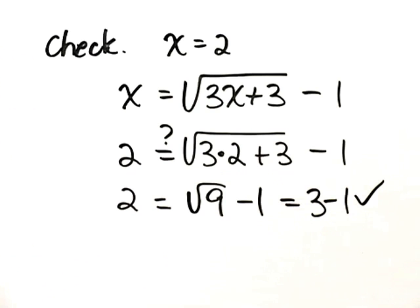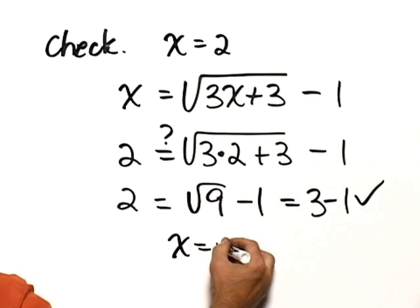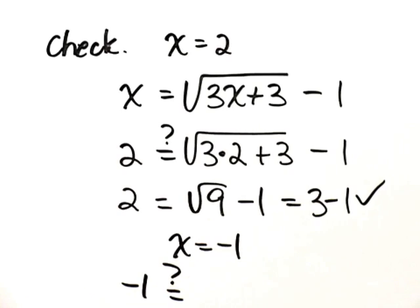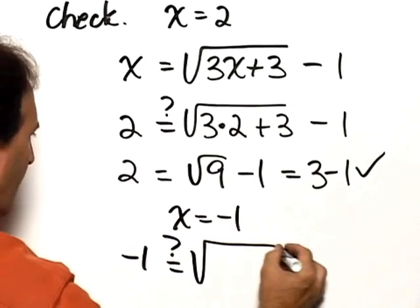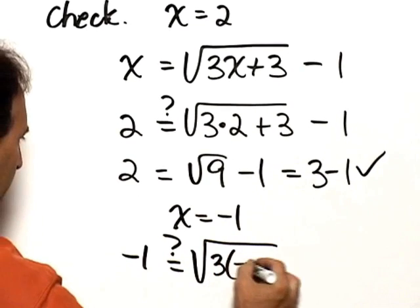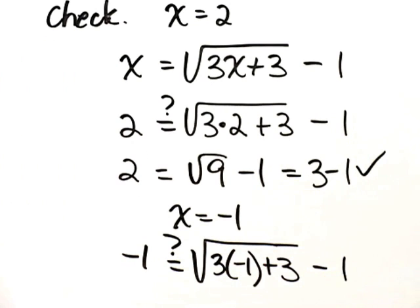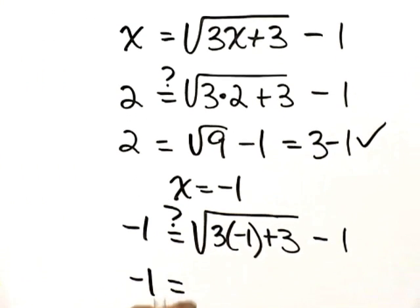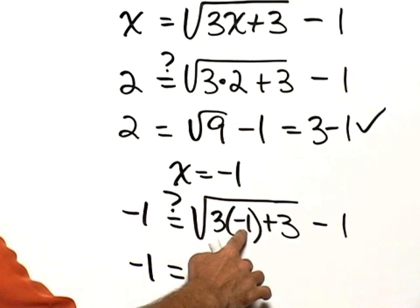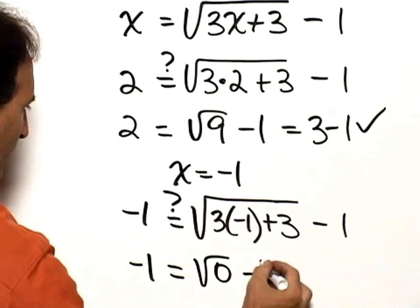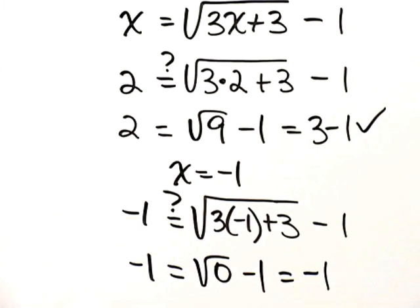Now we need to check x equals negative 1. So we substitute negative 1 in place of x. Does that equal the square root of 3 times negative 1 plus 3 minus 1? So negative 1 equals 3 times negative 1 is negative 3 plus 3 is 0. So this is the square root of 0 minus 1, which of course is equal to negative 1. And so it also checks both numbers work.